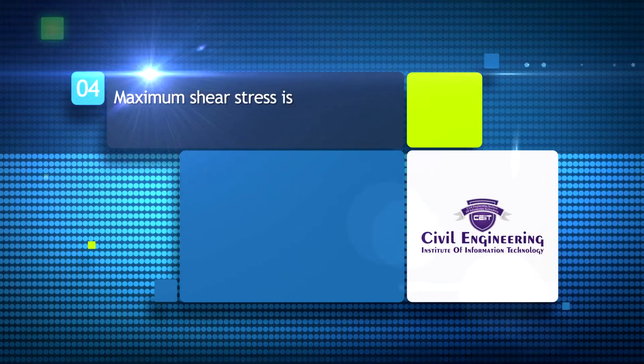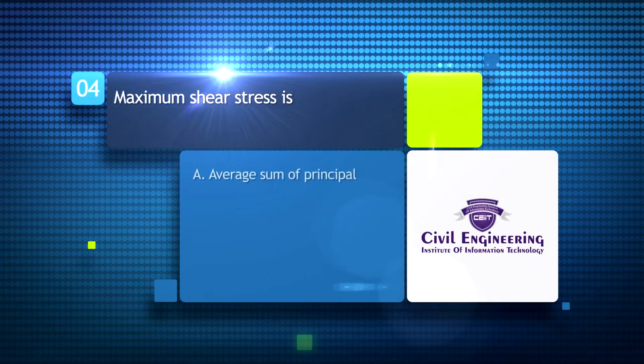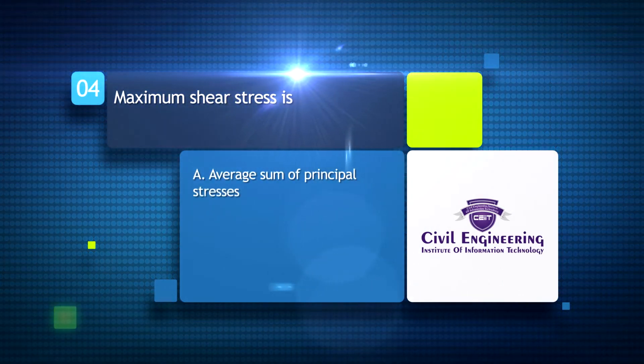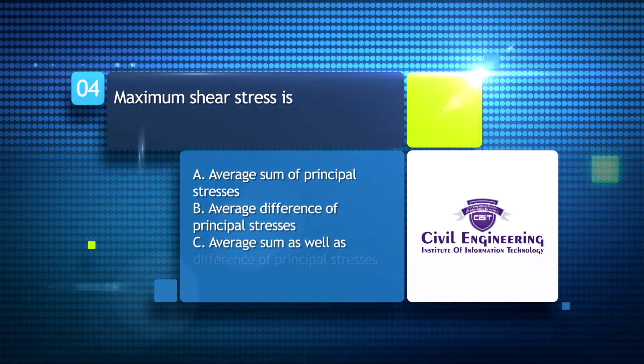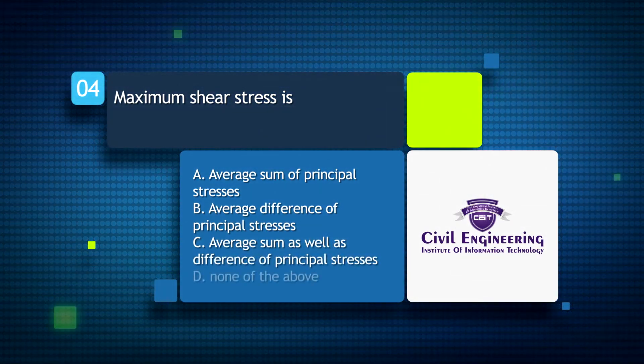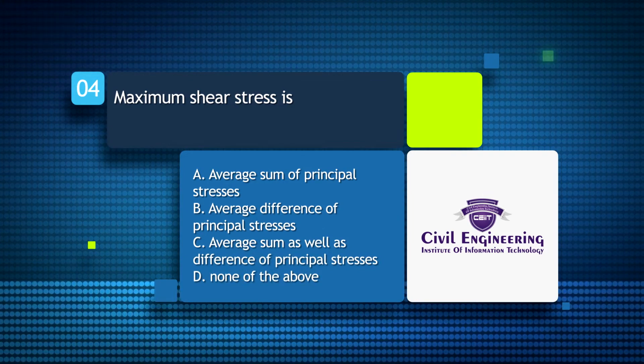Maximum shear stress is: A. the average sum of principal stresses, B. the average difference of principal stresses, C. average sum as well as difference of principal stresses, D. none of the above.